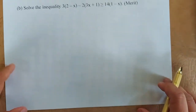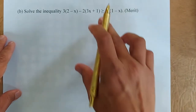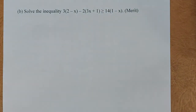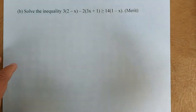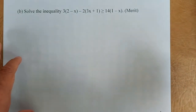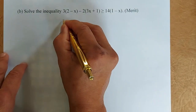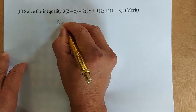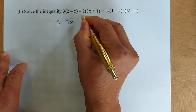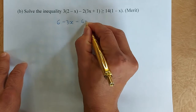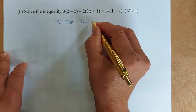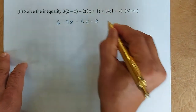Now we are going to do the second question: solving inequalities. Solving inequalities is just the same as though we are using an equal sign. The first thing we are going to do is expand. I'll do a quick method — watch my other video if you do not know how to expand. So 3 times 2 is 6, 3 times negative x is minus 3x, minus 2 times 3x is minus 6x, minus 2 times 1 is minus 2. That is on the left hand side.